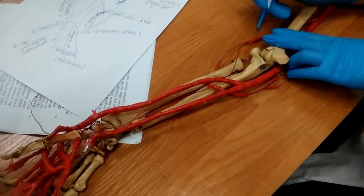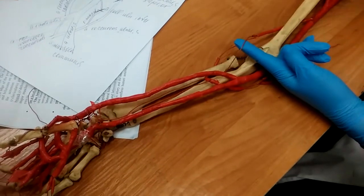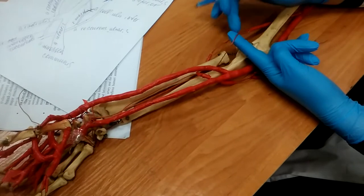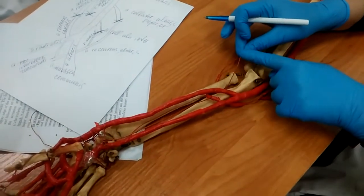This artery is divided into terminal collateral branches. This is the collateral radial artery, and this is the medial collateral. The collateral radial anastomoses with...